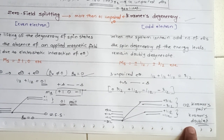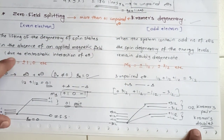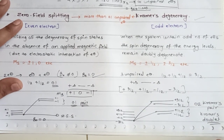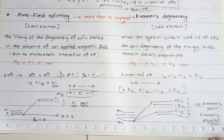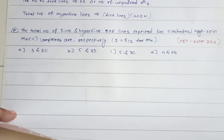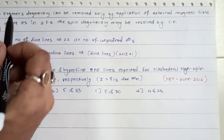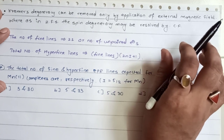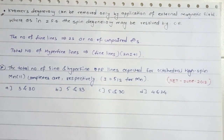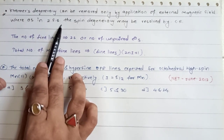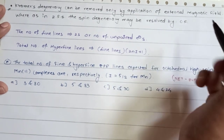To summarize: for even electrons we have zero field splitting; for odd electrons we have Kramers degeneracy. Kramers degeneracy can be removed when you apply an external magnetic field. Zero field splitting, on the other hand, can be resolved by the crystal field (CF). Now there are two formulas: hyperfine lines use 2nI + 1, and fine lines use 2S, where S is the number of unpaired electrons.